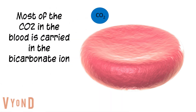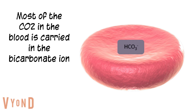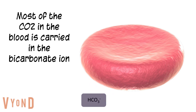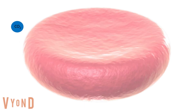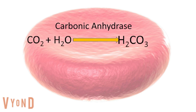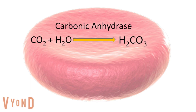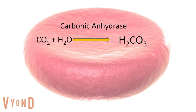Most of the carbon dioxide is carried in the bicarbonate ion. Here's how it works. Carbon dioxide diffuses into the red blood cell. Once inside, it combines with water and an enzyme called carbonic anhydrase to form carbonic acid.